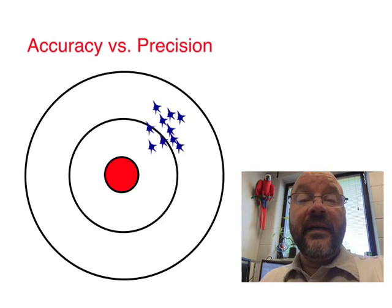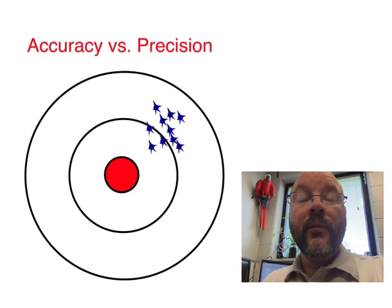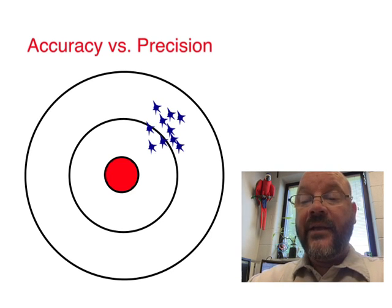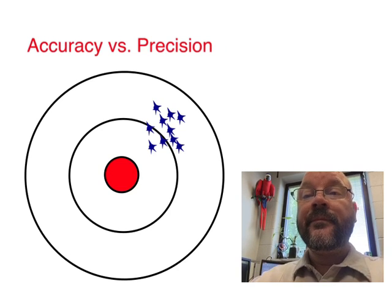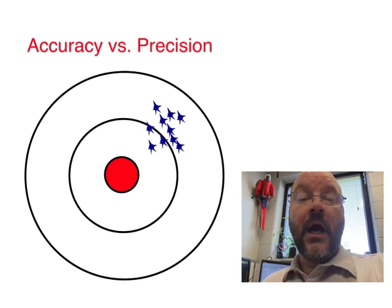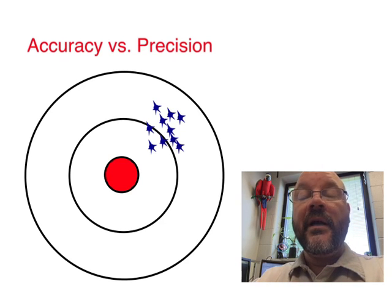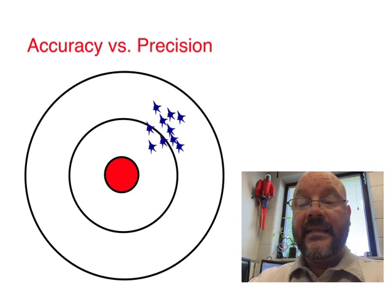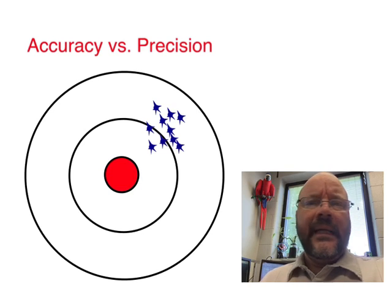Well, since nothing is perfect, two important words that we have to deal with first is accuracy and precision. So take a look here at this target. And here are where some arrows or gunshots hit. Right there. And when we're looking at that, the first thing we might want to say is that those are really off target. Or we might say those are really not accurate.